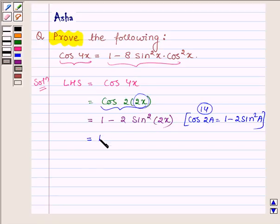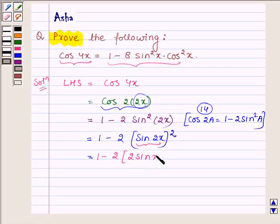Now this is further equal to 1 minus 2 sin 2x whole square, which is equal to 1 minus 2, and sin 2x is 2 sin x cos x whole square.